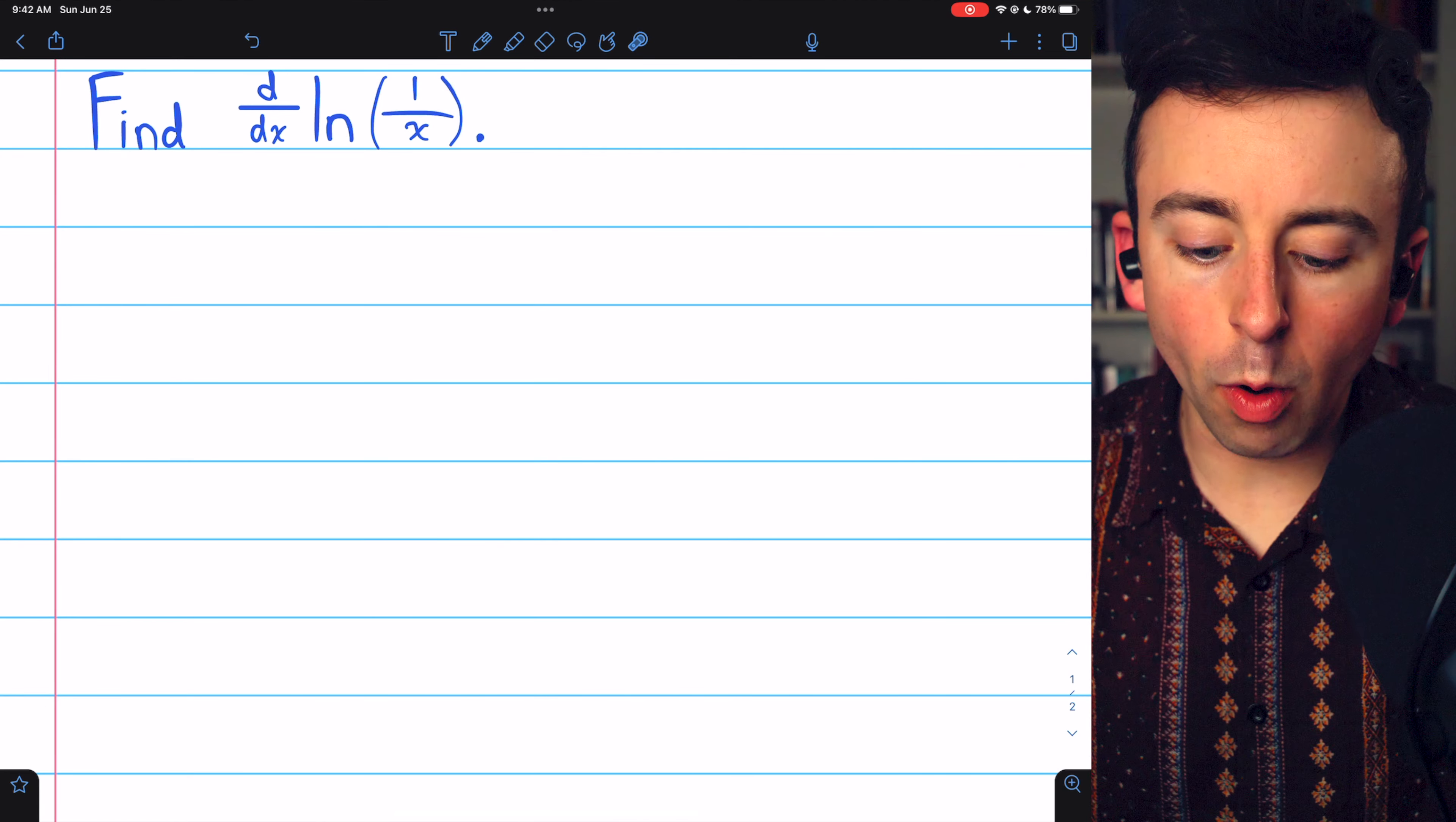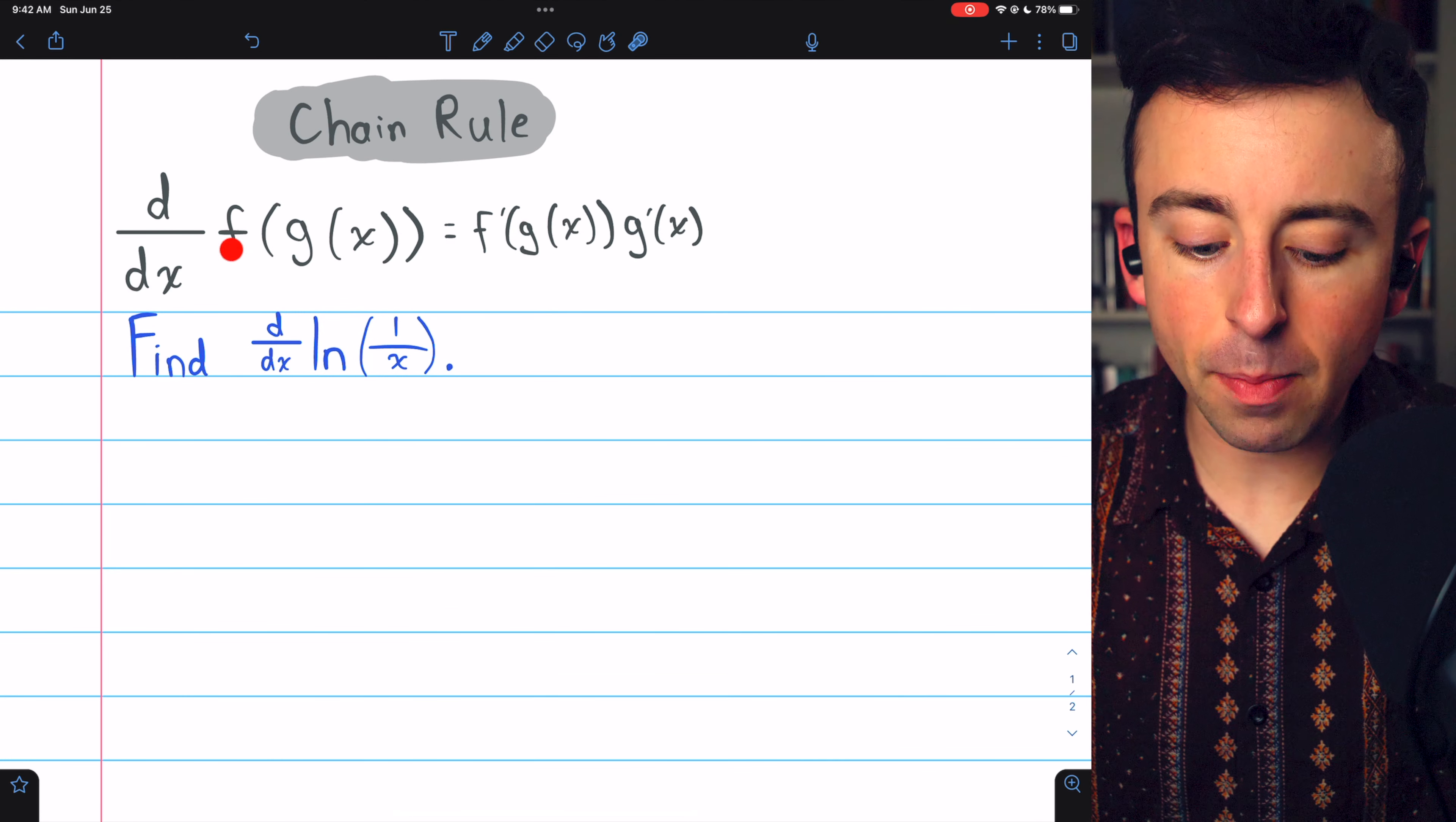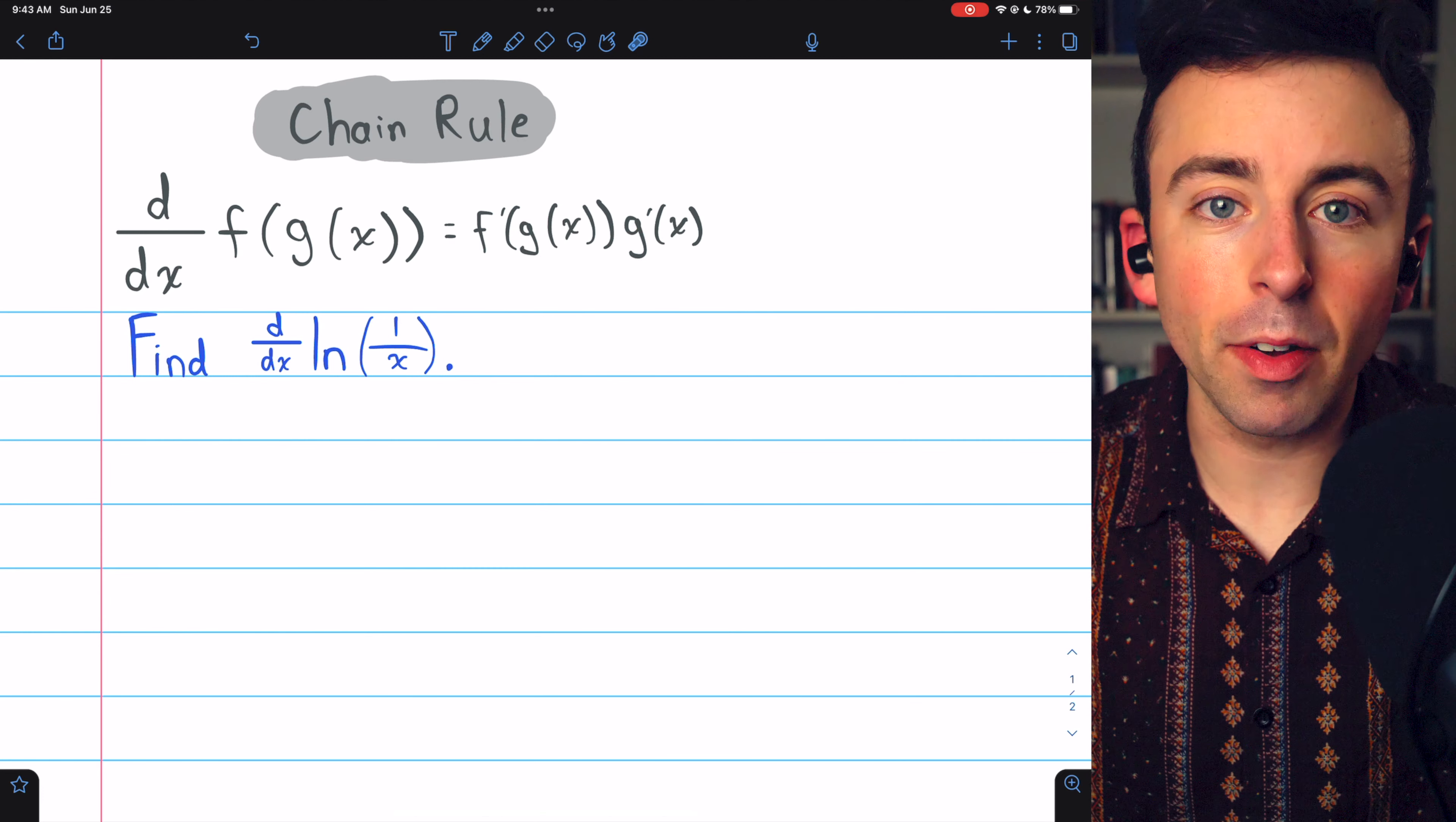The natural log of 1 over x is a composite function, so to take its derivative we'll need to use the chain rule, which tells us the derivative of a composite function f of g of x is f prime of g of x multiplied by g prime of x.